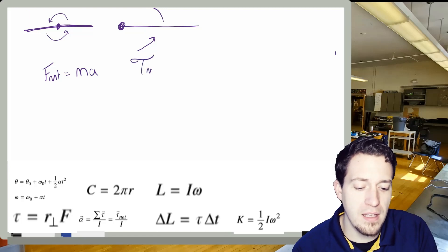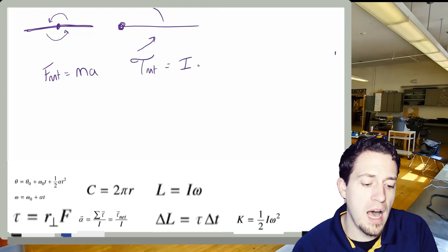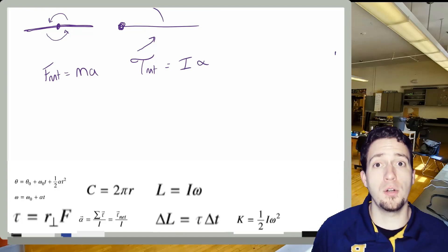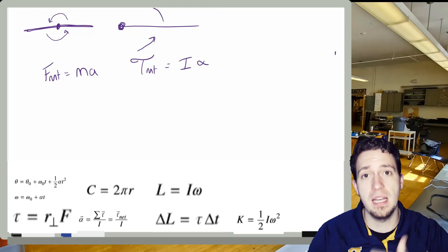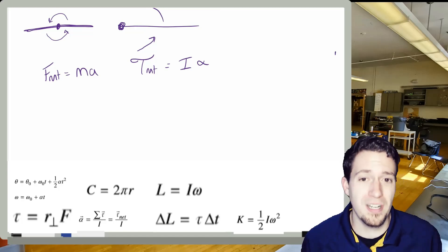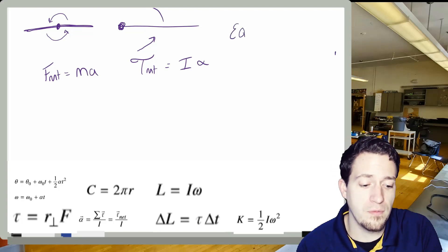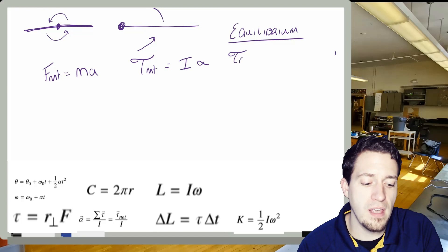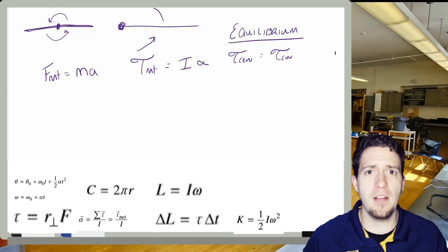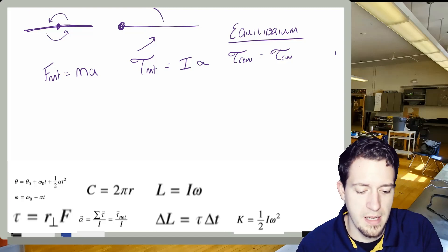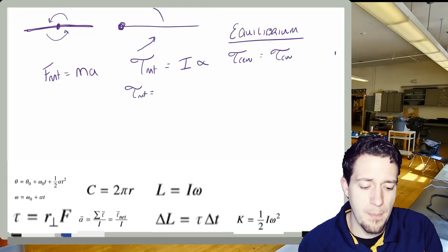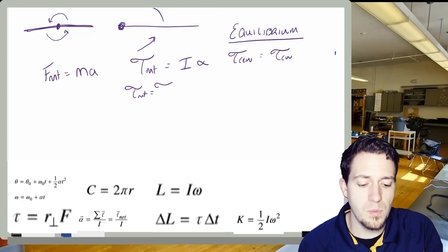What we have now is net torque equals I-alpha. We care about that rotational inertia. For torque problems we can have things in equilibrium, just like we did with forces, or we can have accelerated motion. If we have equilibrium, the counterclockwise torques would equal the clockwise torques. If we have an accelerating system, we take the counterclockwise torques and subtract the clockwise torques.